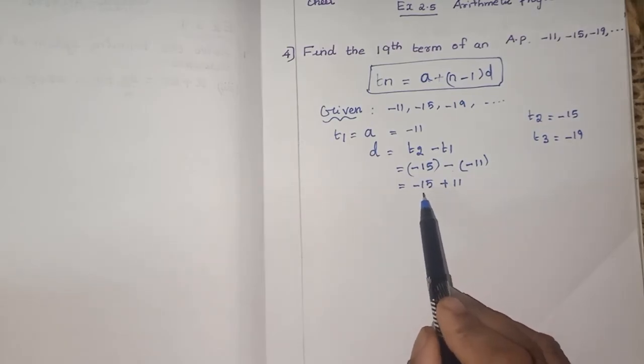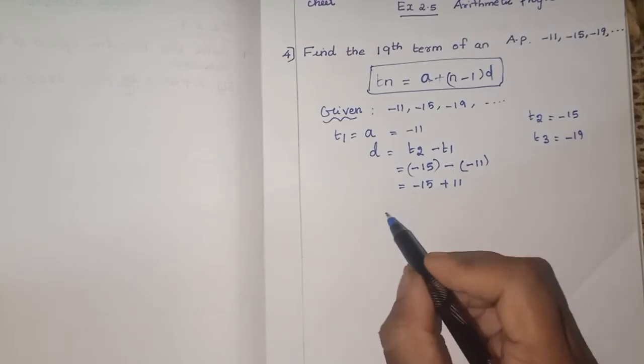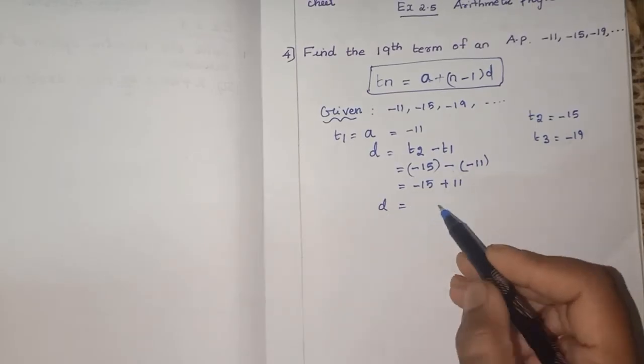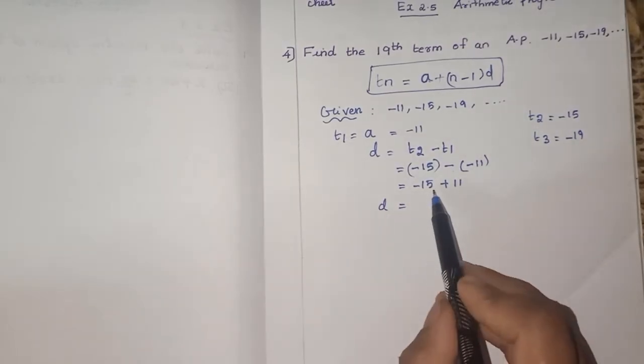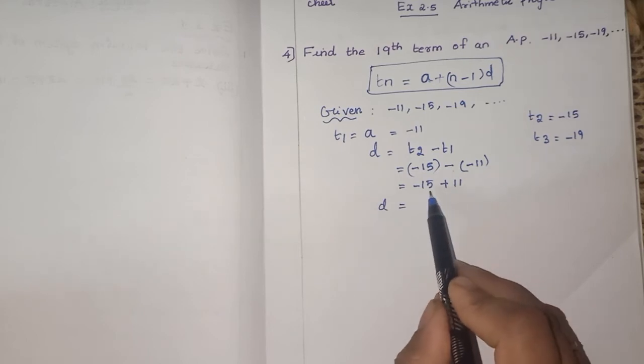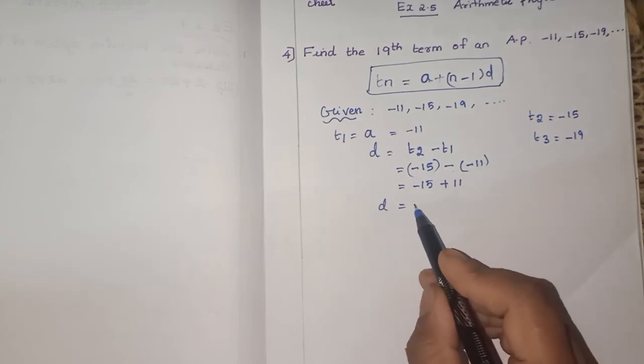And get and put the sign of the greatest number. So 15 is greatest. So what is minus 15 plus 11? That is you have to subtract first, 15 minus 11 is 4. The sign of greater number, that is 15 is minus, so you have to put the minus.